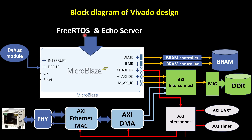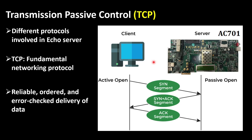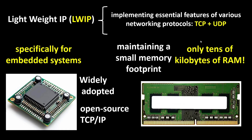Today we are going to use FreeRTOS as the operating system and run the echo server application on the MicroBlaze. Here is the main picture of our scenario: we will run the server on our evaluation board AC701, and we have a client running on our PC. We will run Python as the client and they will send and receive data over the Ethernet connection, using TCP as the fundamental networking protocol.